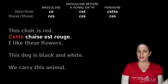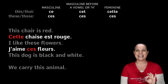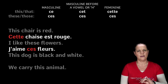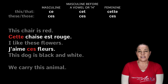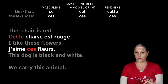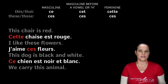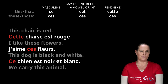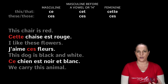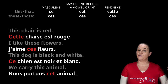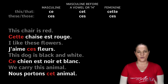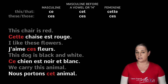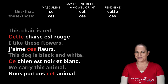J'aime ces fleurs — I like these flowers. Because in the plural, no matter what gender, it is ces, C-E-S. This dog is black and white: dog is masculine and begins with a consonant, so ce chien — ce chien est noir et blanc. And finally, we carry this animal: animal begins with a vowel and is masculine, so nous portons cet animal.